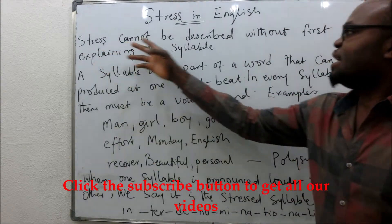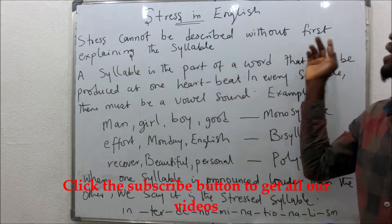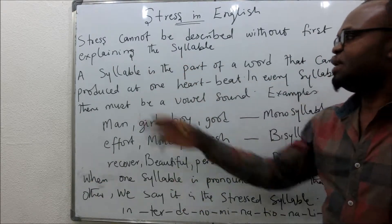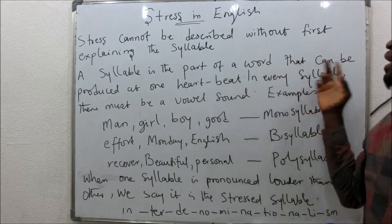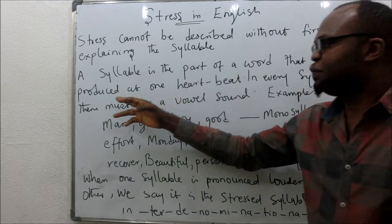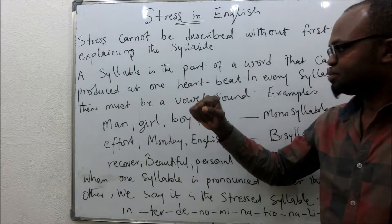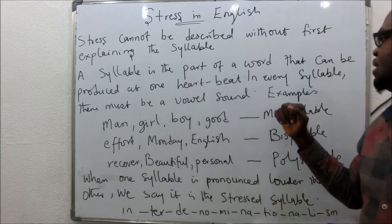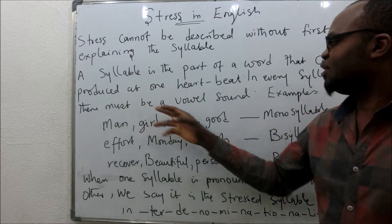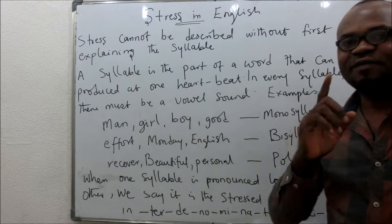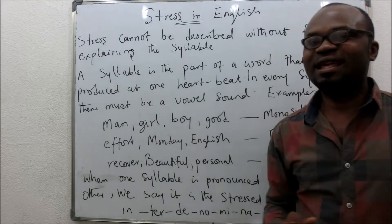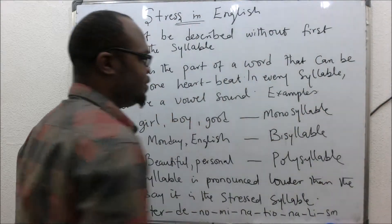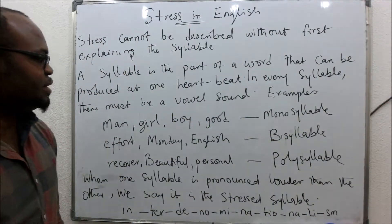Stress cannot be described without first explaining syllable. So what is a syllable? A syllable is a part of a word that can be produced or pronounced at one go. Very importantly, in every syllable there must be a vowel sound. Now let's take a look at this to know what a syllable is.